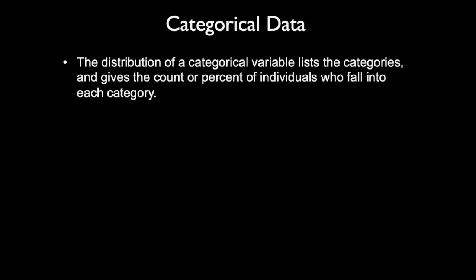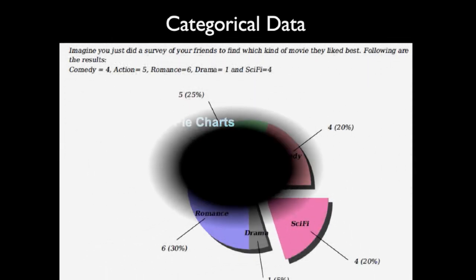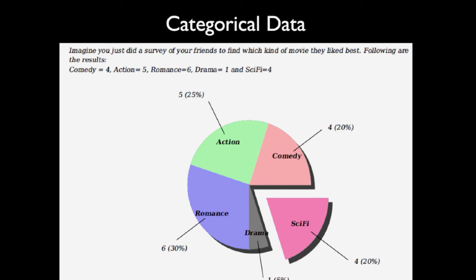Here we use two types of graphs. The first one is pie charts. For a data set with categories like comedy, action, romance, drama, and sci-fi, first we find the percentage and then divide a circle accordingly. You can see: action 25%, comedy 20%, sci-fi 20%, drama 5%, romance 30%.